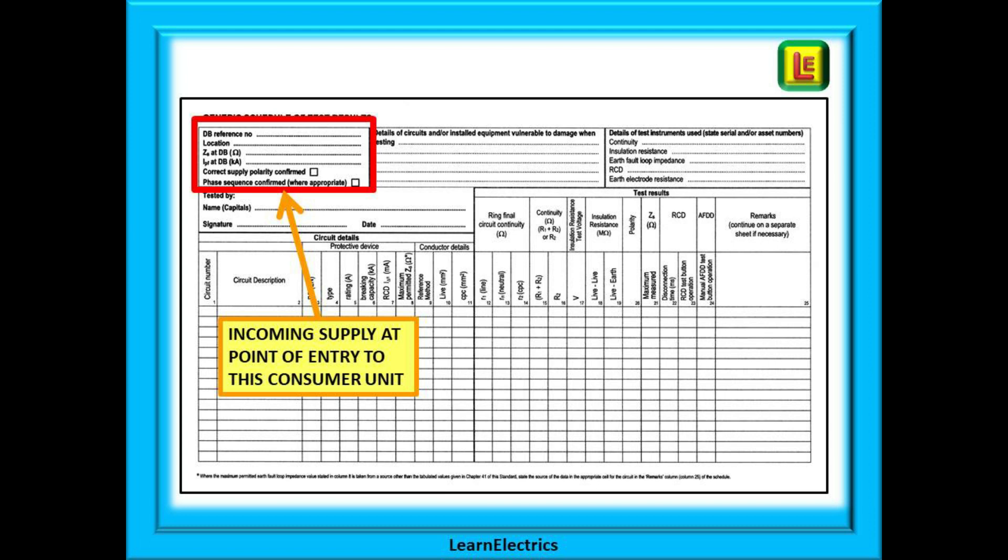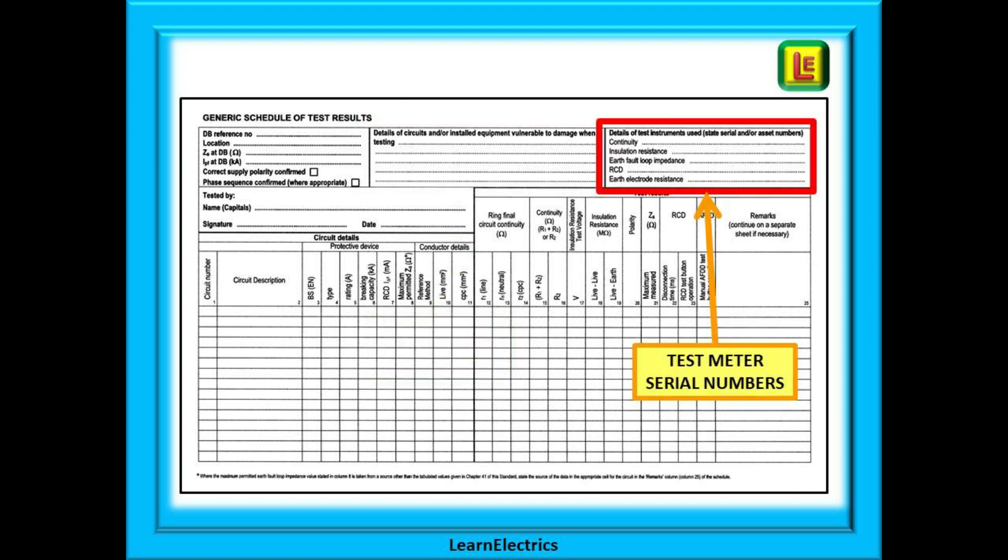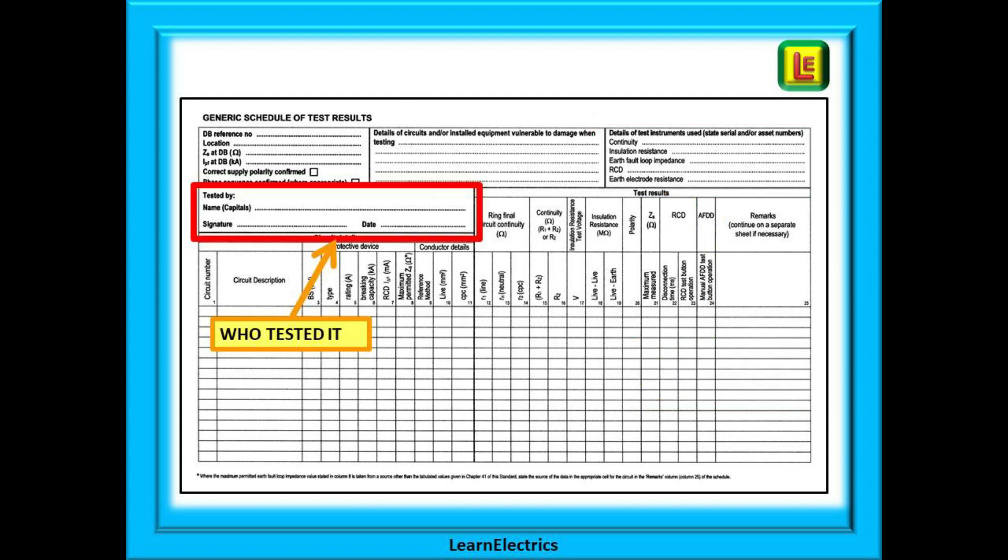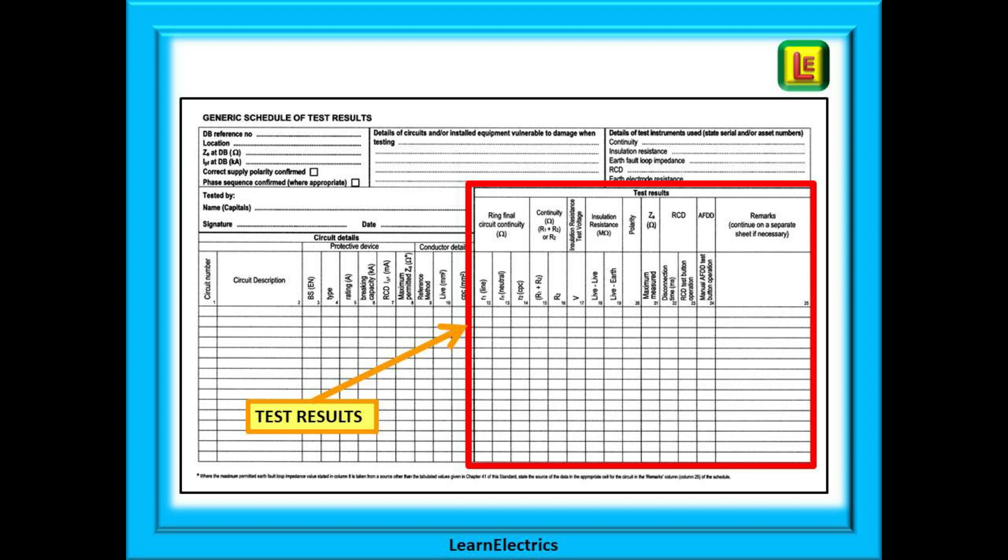I break the schedule of test results into six distinct blocks that are complete in turn. Starting at the top left we enter details of the incoming supply at the main switch to this consumer unit. In the centre we enter details of any circuits that might be susceptible to damage during testing. Top right we must enter details of the test meter or meters that were used to test the circuits on this schedule. Back to the left hand side now and a section for the name and signature of the person testing the circuits and the date that the tests were carried out. Bottom left we find a big section called circuit details with enough entry rows for a standard 12 way consumer unit. More than 12 ways will require a continuation sheet. And finally on the right another big section simply called test results.